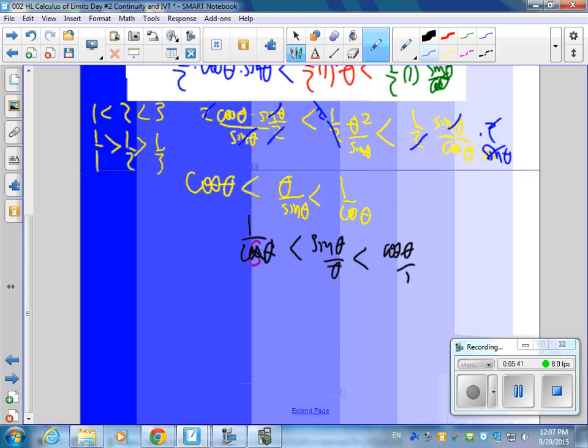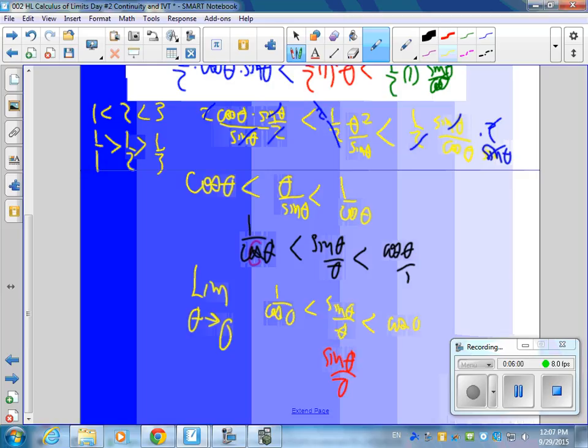And I'm going to take the limit as theta goes to 0. What's the cosine of 0? 1. And then this one is cosine of 0 is 1. So I don't know what sine theta over theta is, but it's somewhere between 1 and 1.